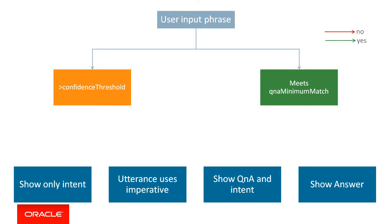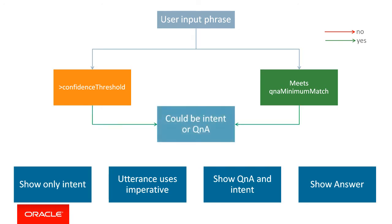Now let's consider the case where the input matches both an intent and a Q&A. In which case, additional logic is used to establish if this is more likely to be an intent. The bot will check to see if the input phrase uses an imperative verb — basically, does the sentence look like it's a command? Verbs such as cancel, order, transfer are imperative and suggest this phrase is more likely to be an intent, in which case the intent is fired. The Q&A features of Intelligent Bot are pre-configured with these imperative verbs, although you can add and remove verbs from this list should you wish to.